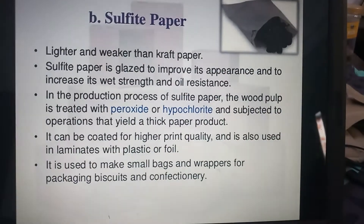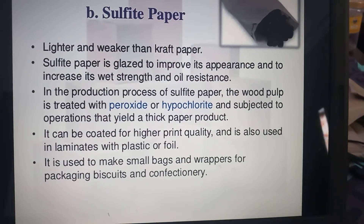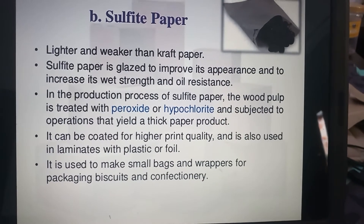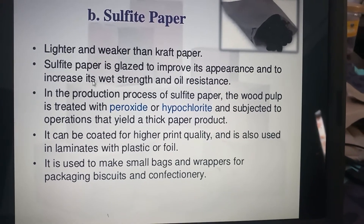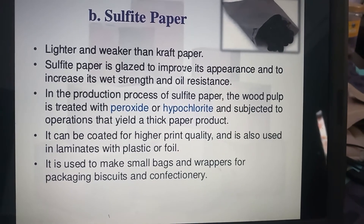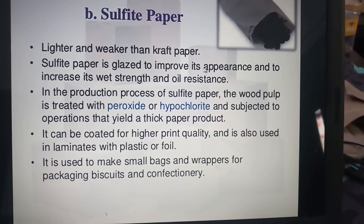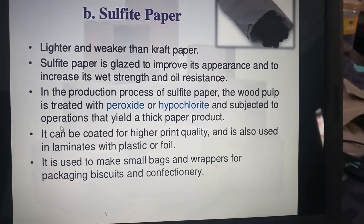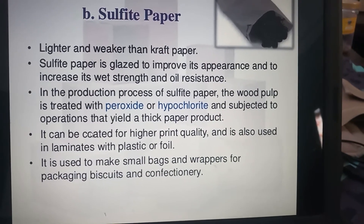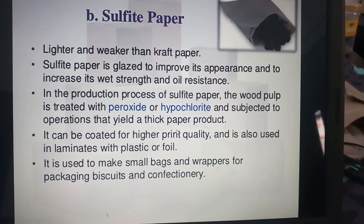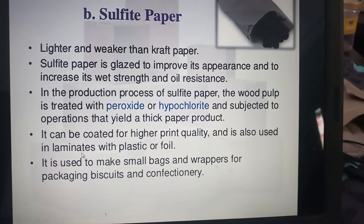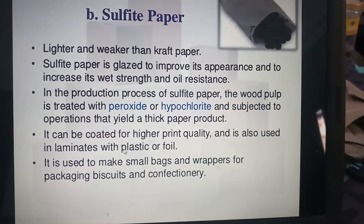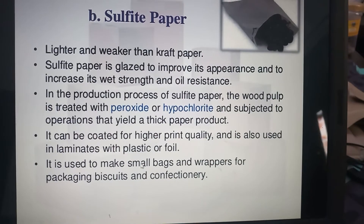The second type is sulfite paper. It is lighter and weaker than kraft paper. Sulfite paper is glazed to improve its appearance, which increases its wet strength and oil resistance. It can be coated for higher print quality and can be used in laminates with plastic or foil. It is used to make small bags and wrappers for packaging of biscuits and confectionery.